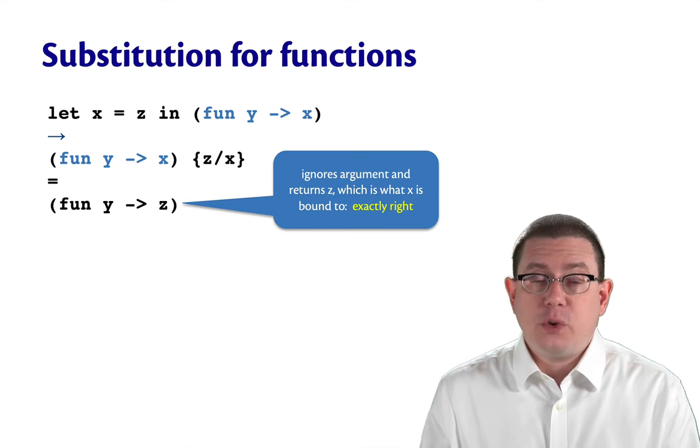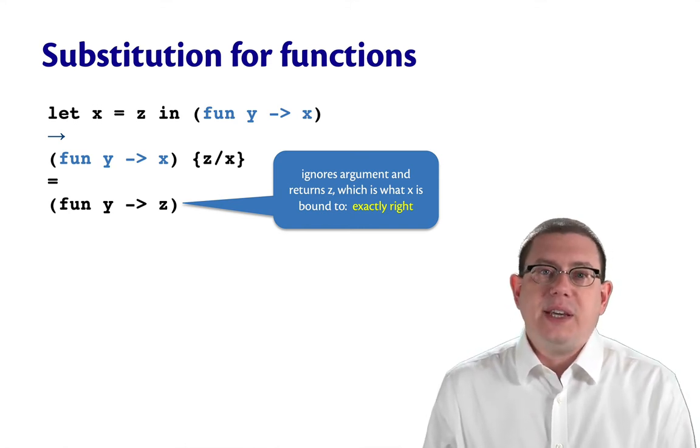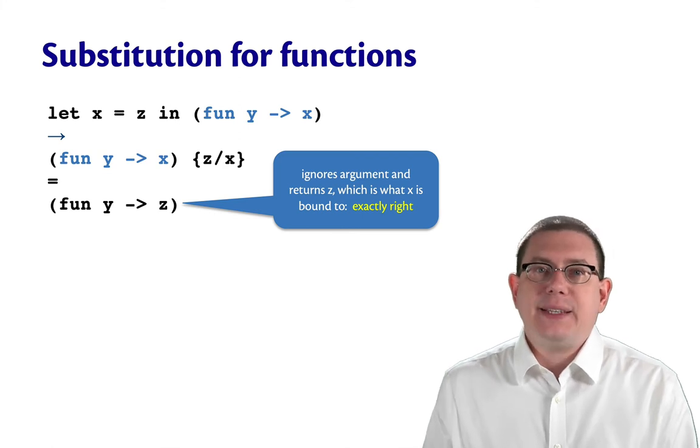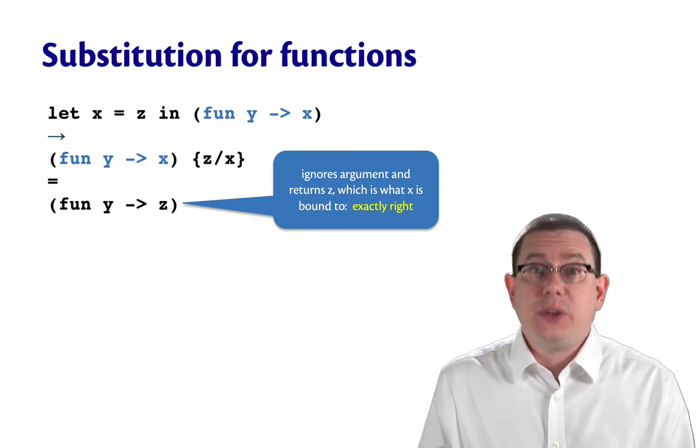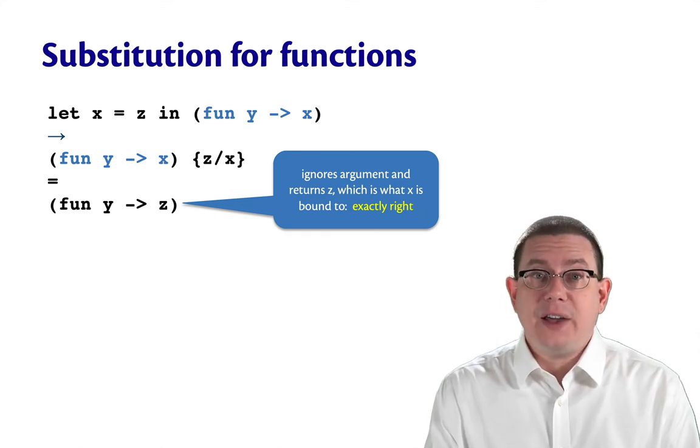That's going to ignore its argument, which is what we wanted these two little functions to do. And it's going to return z. Well, z is what x is bound to. So this is exactly the right thing. This is what we wanted to have happen. In the end, the right value is being returned.